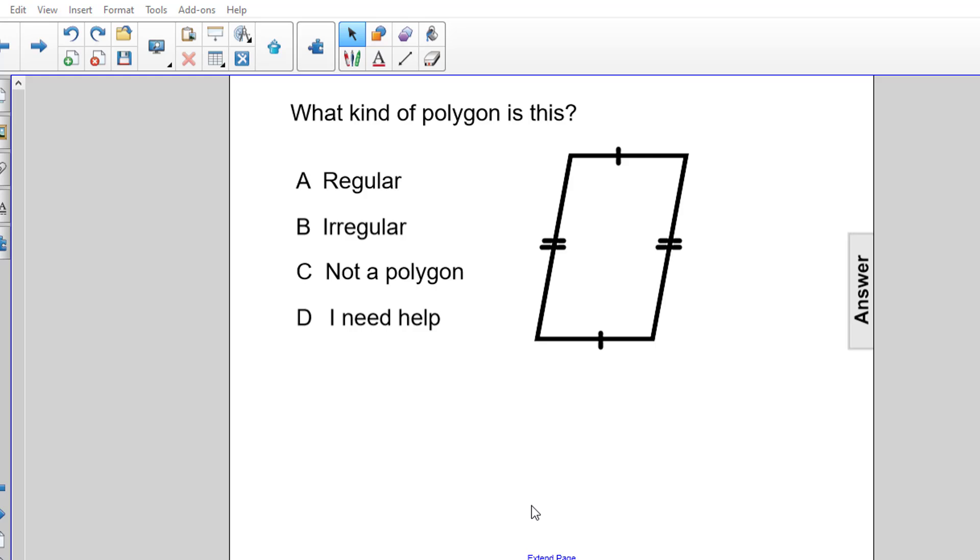B, is this an irregular polygon? Or C, is this not a polygon at all?